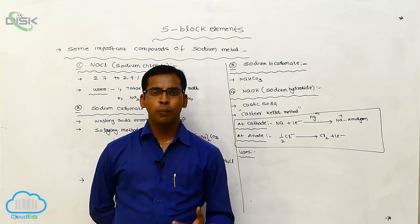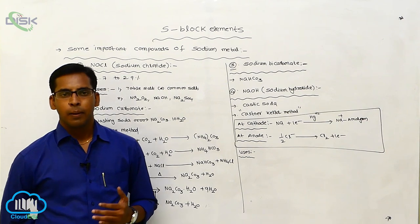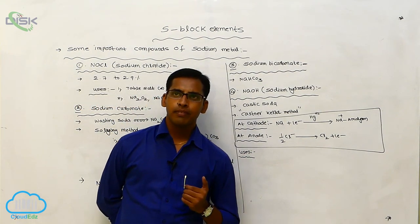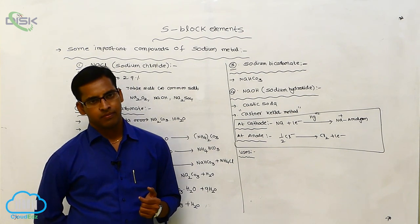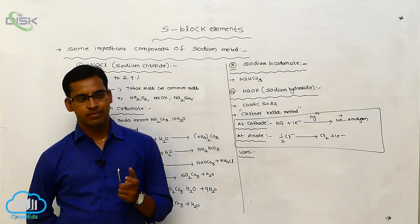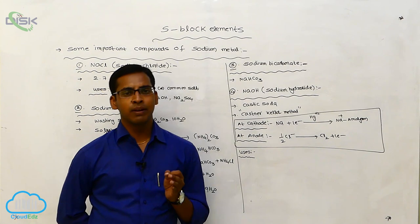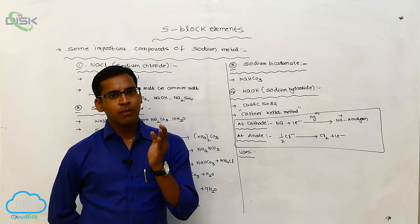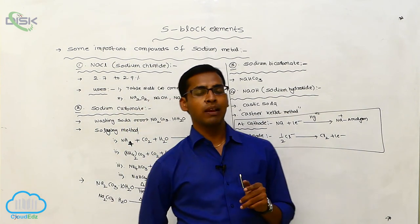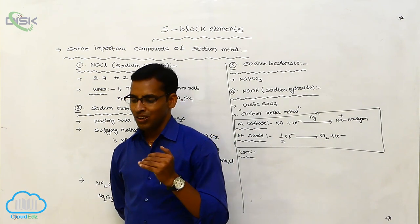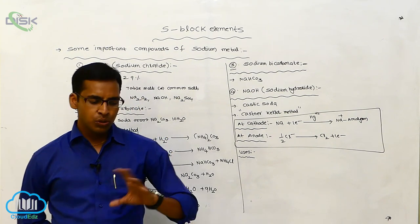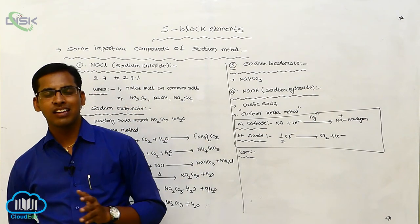Now we consider the next topic: second group elements. The second group elements are beryllium, magnesium, calcium, strontium, barium, and radium — these are called second group elements, also known as alkaline earth metals. They are called alkaline earth metals because they produce oxides and hydroxides. The first group elements are called alkaline metals because they form strong hydroxides in water.